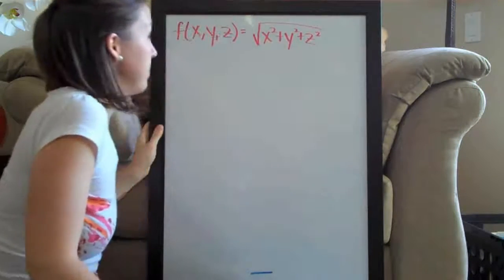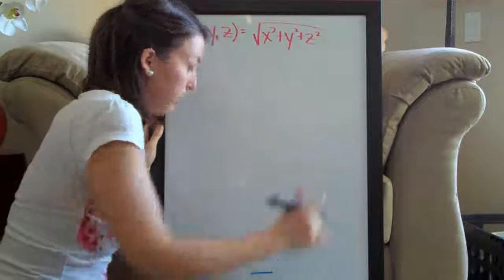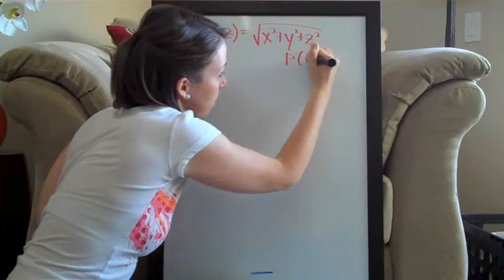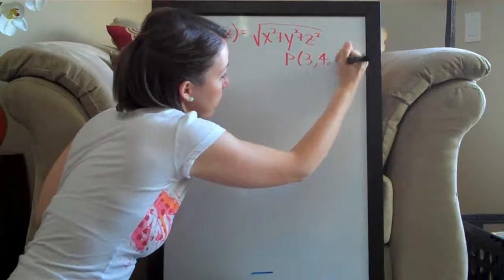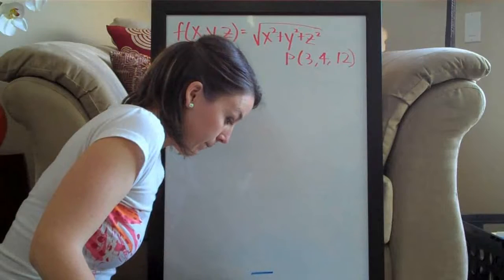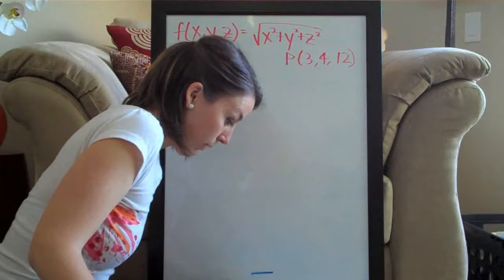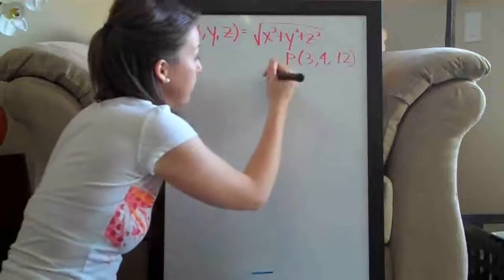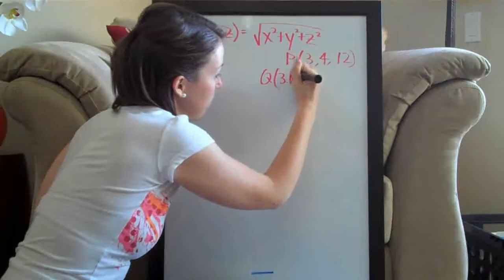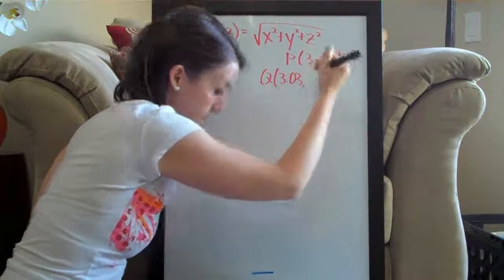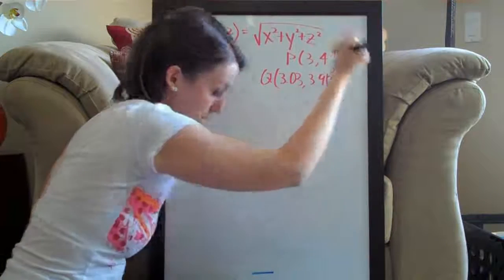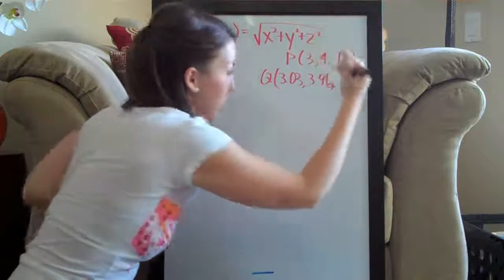They ask us to find the equation of the tangent plane at the point (3, 4, 12), and then they're going to ask us to plug in the point (3.03, 3.96, 12.05).